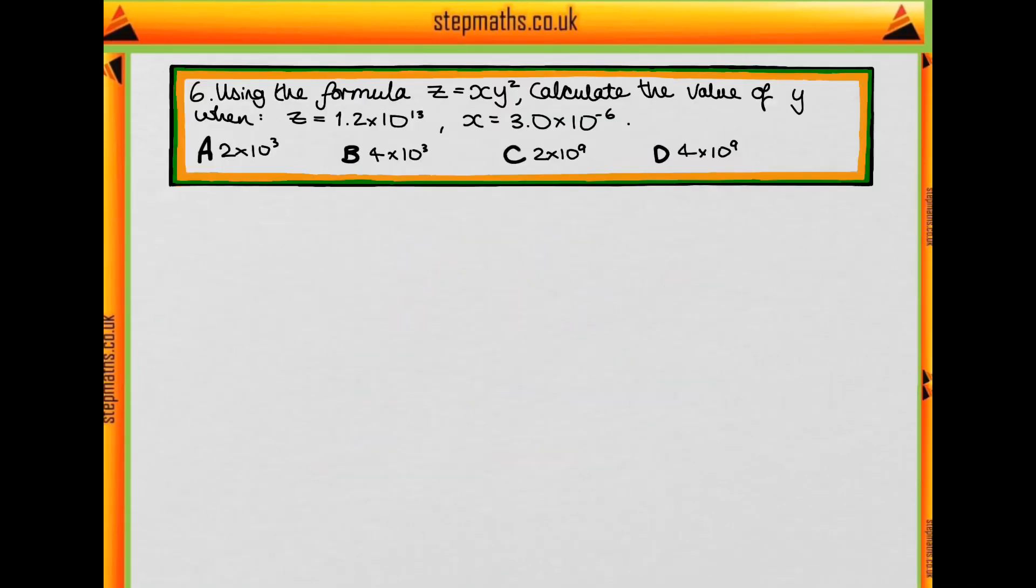Here is a question where we're given the value of x and of z, and we're asked to use the formula z equals xy squared to calculate the value of y. Let's write out that formula and sub in x and z.